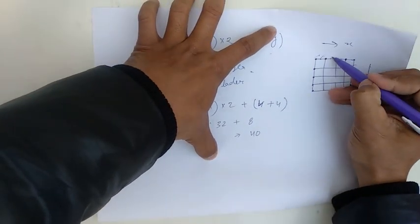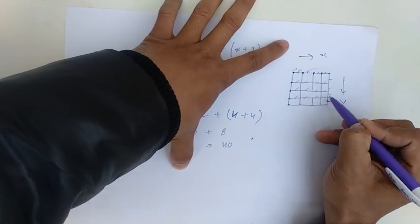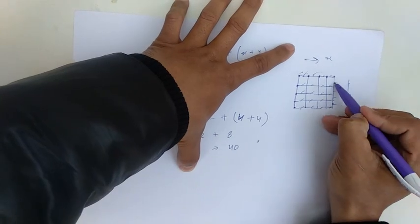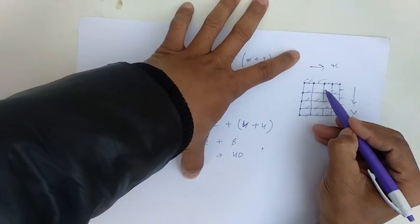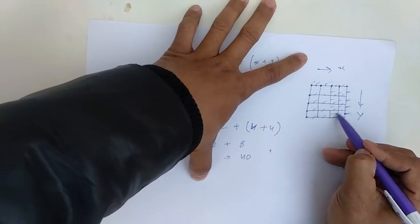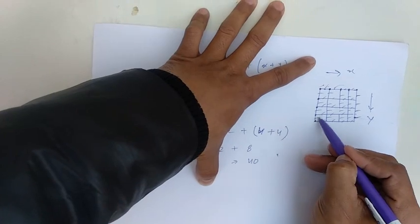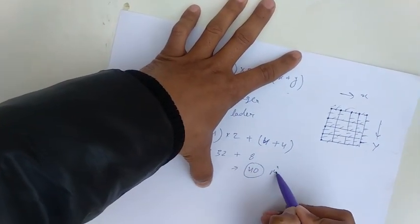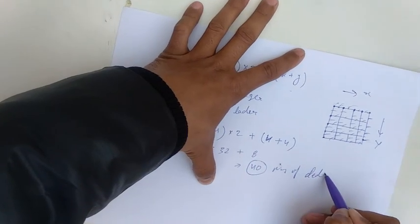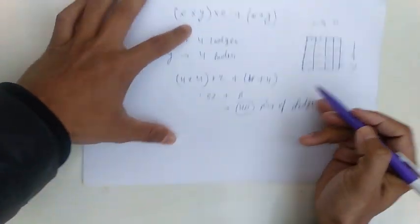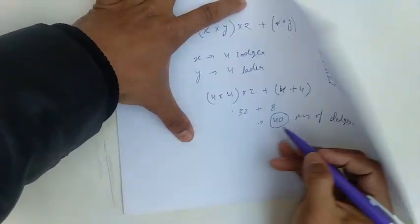You can count: 1, 2, 3, 4, 5, 6, 7, 8, 9, 10, 11, 12, 13, 14, 15, 16, 17, 18, 19, 20, 21, 22, 23, 24, 25, 26, 27, 28, 29, 30, 31, 32, 33, 34, 35, 36, 37, 38, 39, 40. Number of ledgers.